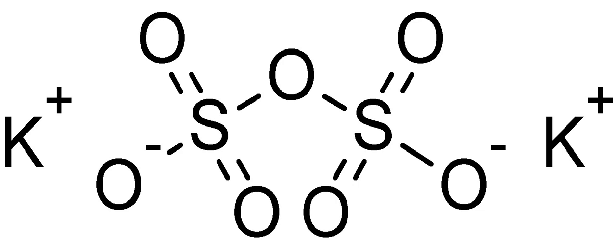A semi-structural formula for the pyrosulfate anion is O3SOSO3 with a 2-minus charge. The oxidation state of sulfur in this compound is plus 6.